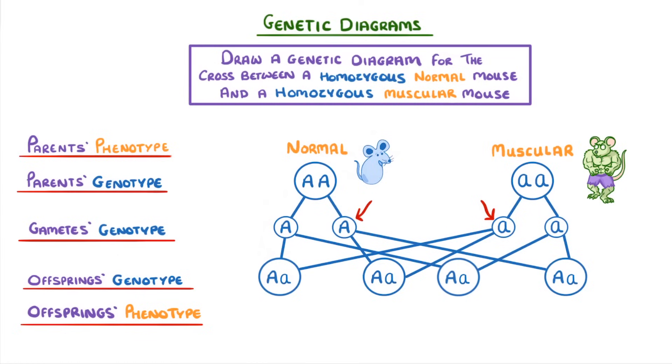This particular case is a bit boring though because all of the offspring are heterozygous, which remember means that they have one allele of each type, and because normal muscles are dominant to large muscles, all the heterozygous offspring will have the normal phenotype.